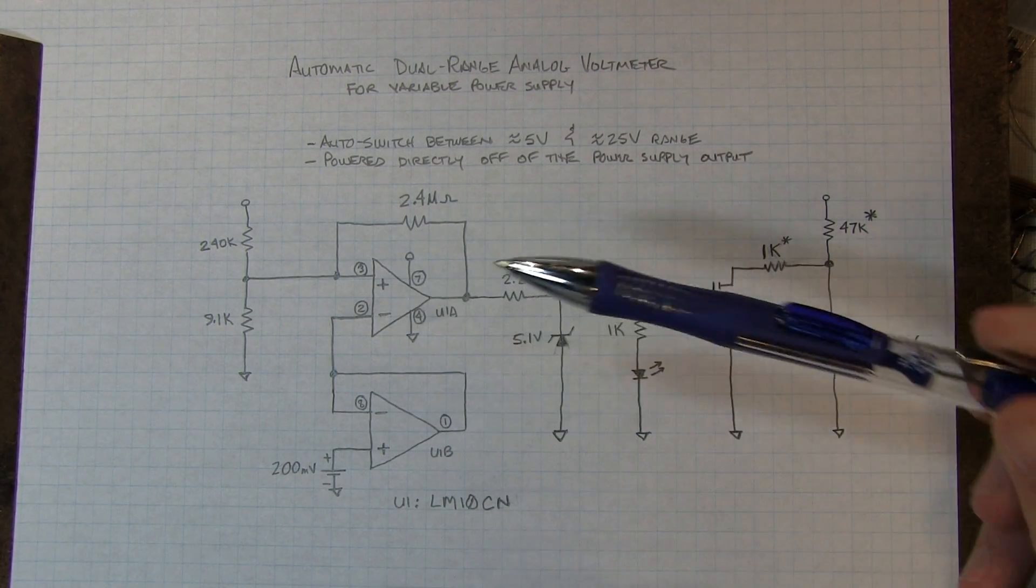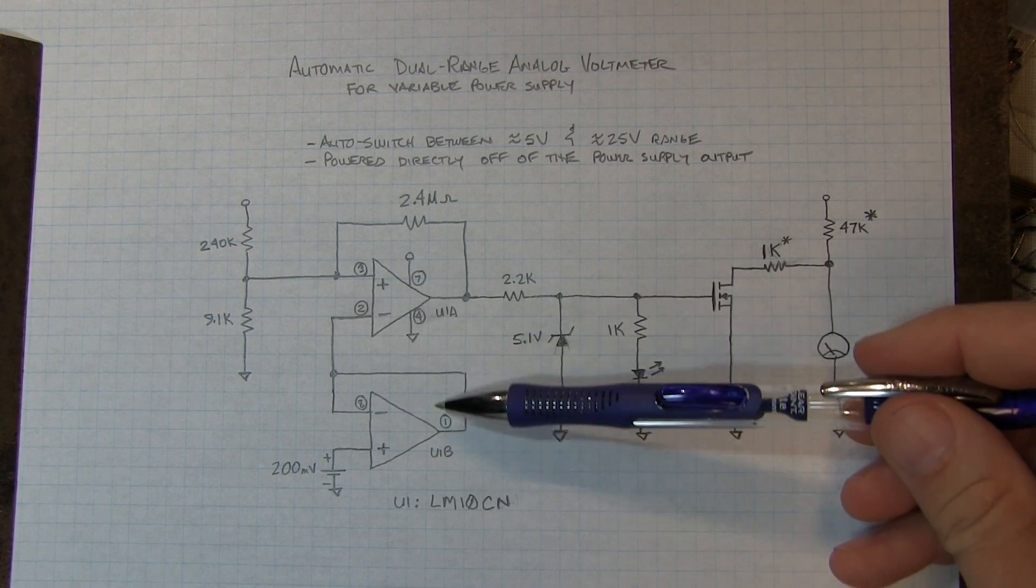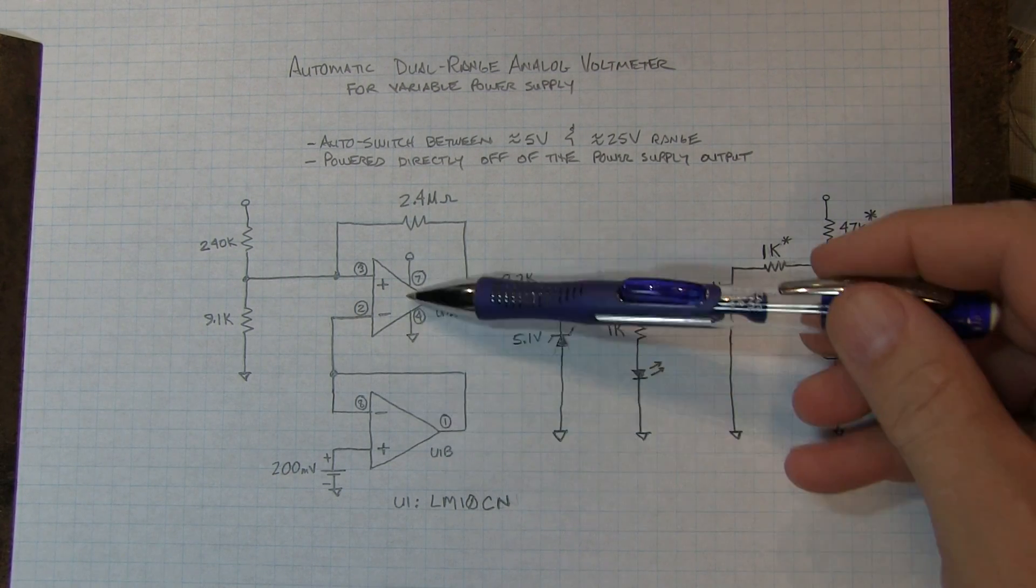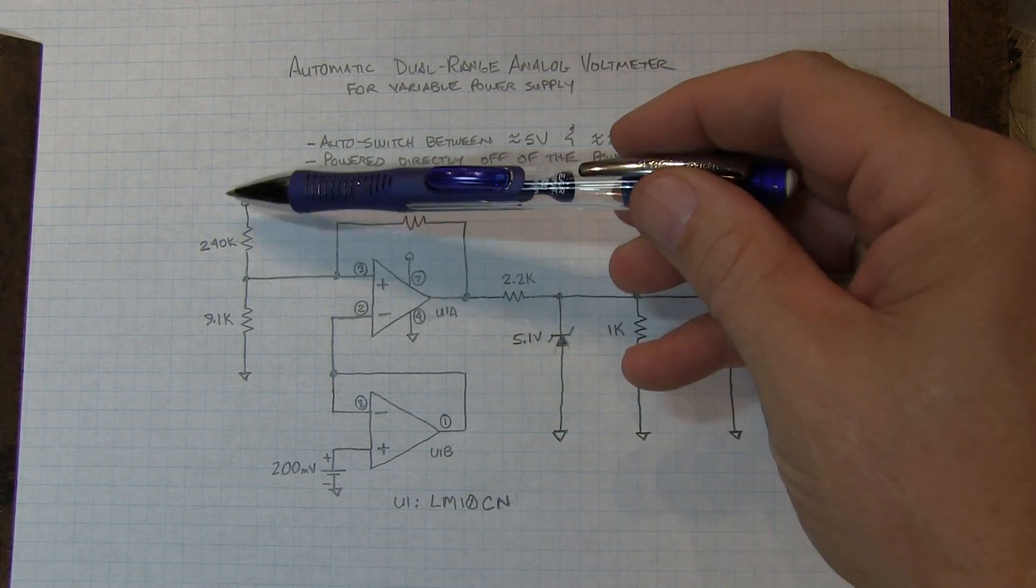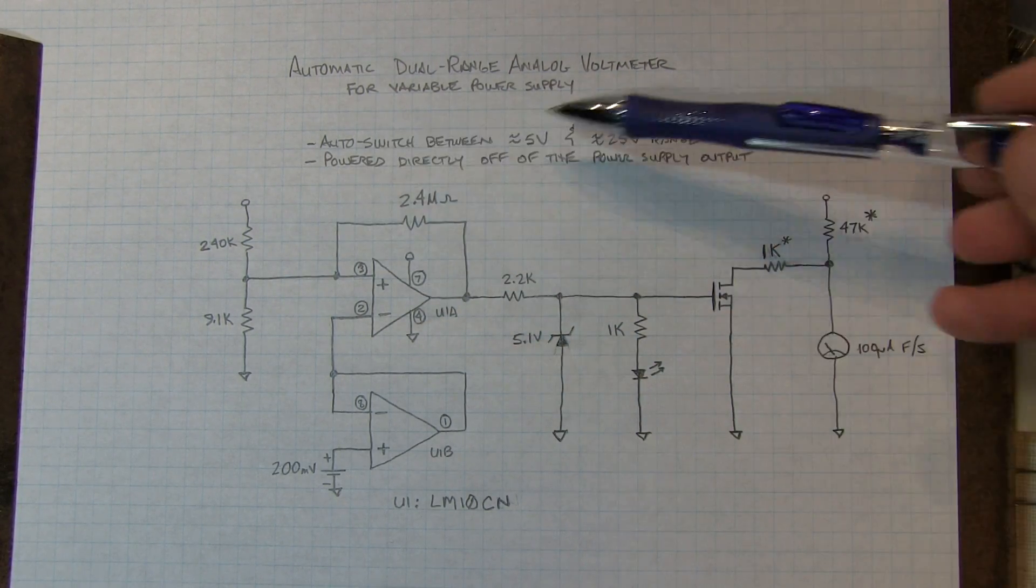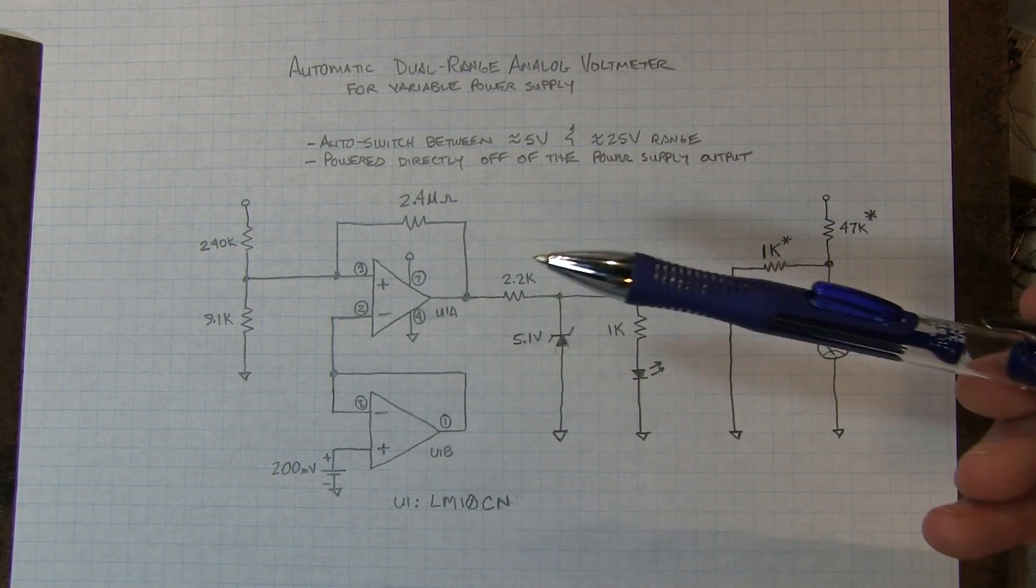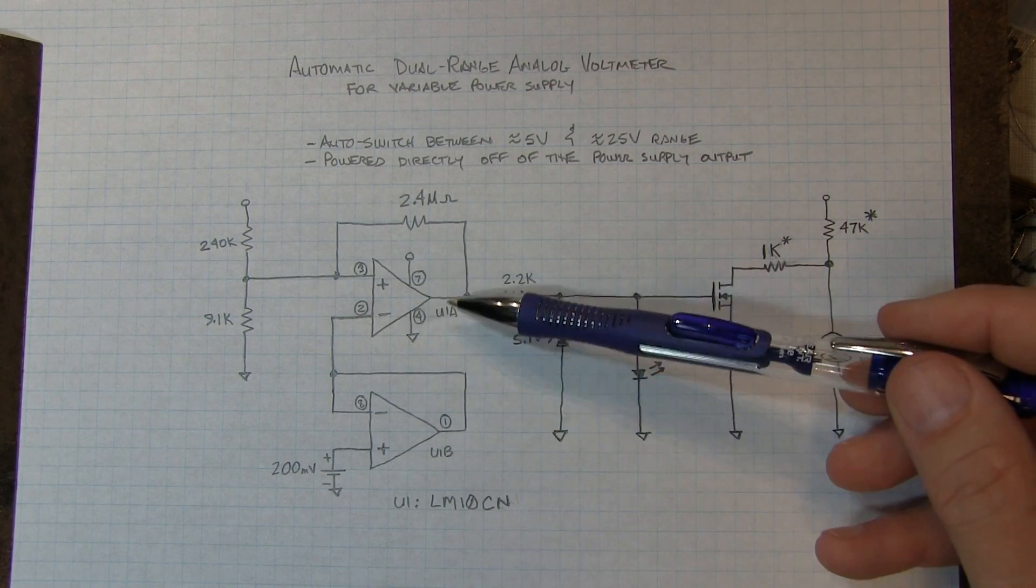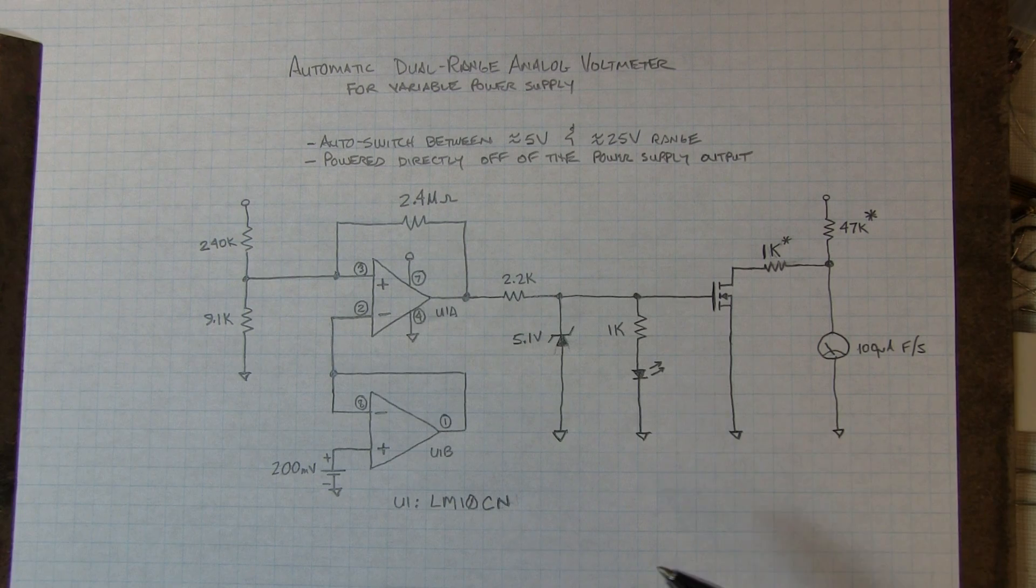And again, the beauty of this is that since this LM10 can operate over such a wide supply range, we can just power this whole circuit up, because there's our power supply for the LM10 right from that same output from the power supply. Now, of course, when we're down below one point one volts, the op amp isn't working, but that's also the situation where everything is going to be switched off anyway. So it works just fine.